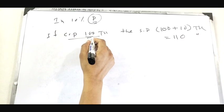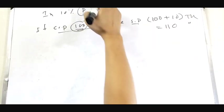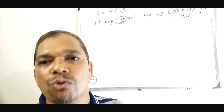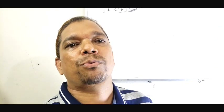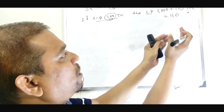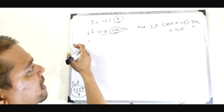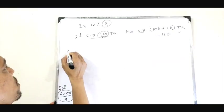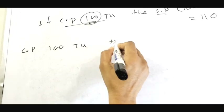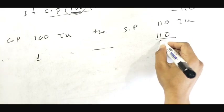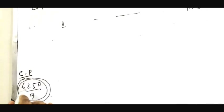If the cost price is 100, the selling price will depend on whether there is a loss or profit — loss means minus, profit means plus. So for 10% profit: if cost price is 100, then selling price is 110. That is the Unitary Method. The cost price works out to 6250 divided by 9.